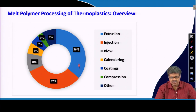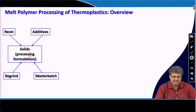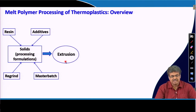In the processing of thermoplastics, the first step is to mix the polymer and add different types of additives. We can re-grind material or make a masterbatch of additives and add it here, mixing everything in this step, before taking it to the next step.